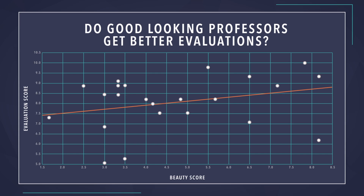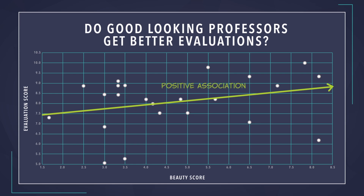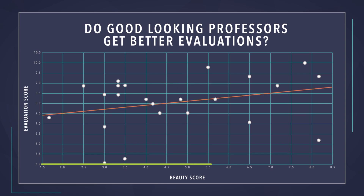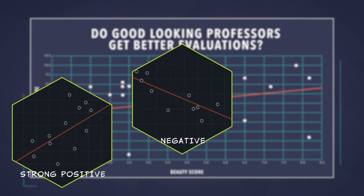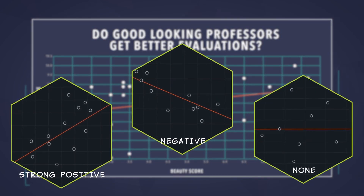First, we immediately see if the line is sloping upward or downward. In our dataset, we see the fitted line slopes upward. It thus confirms what we had conjectured earlier by just looking at the scatter plot. The upward slope means that there is a positive association between looks and evaluation scores — on average, better-looking professors are getting better evaluations. For other datasets, we might see a stronger positive association, or a negative association, or perhaps no association at all.